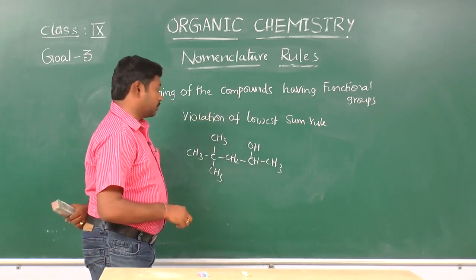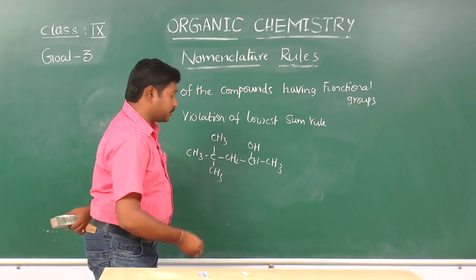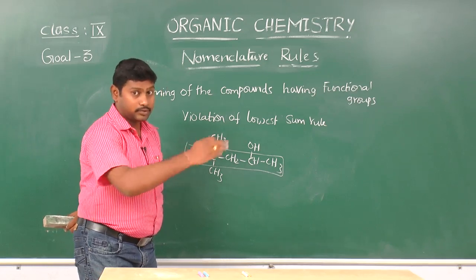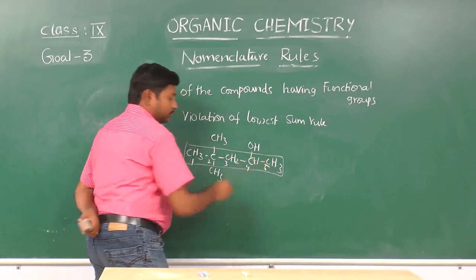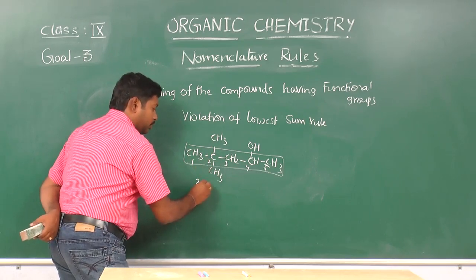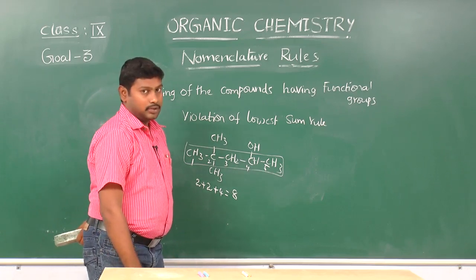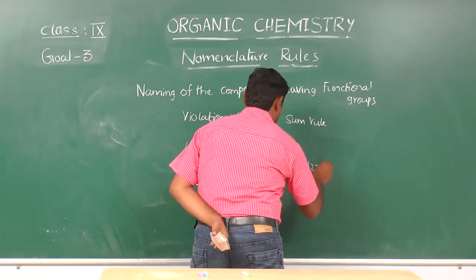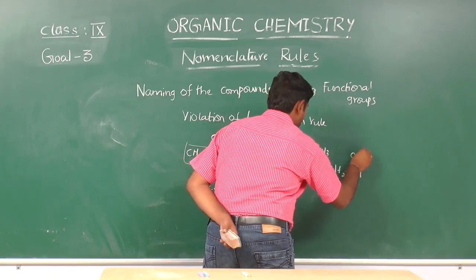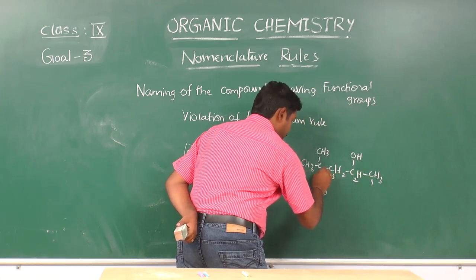If we observe this compound, according to the lowest sum rule, we number from left to right: 1, 2, 3, 4, 5. Here, two methyl groups are present on the second position, so the sum of the locants is 2 + 2 + 4 = 8. Now if we number from right to left: 1, 2, 3, 4, 5 — a functional group is present in this compound.